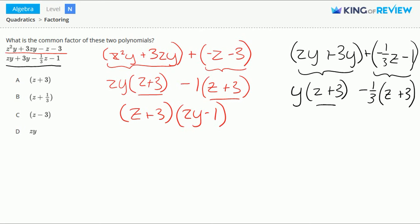Again here, we have a z plus 3 in both groupings. This means we can factor out a z plus 3. So we have z plus 3 times y minus 1 third.